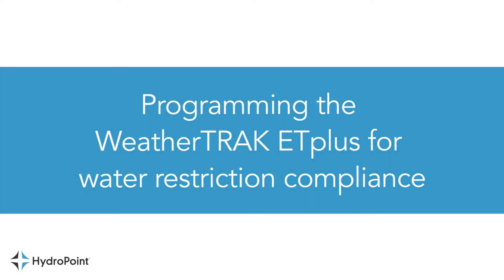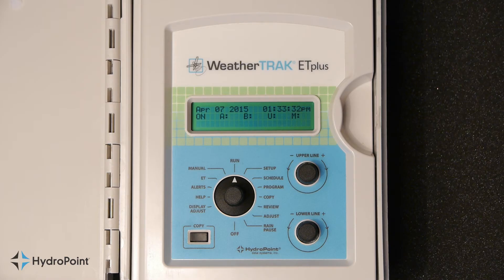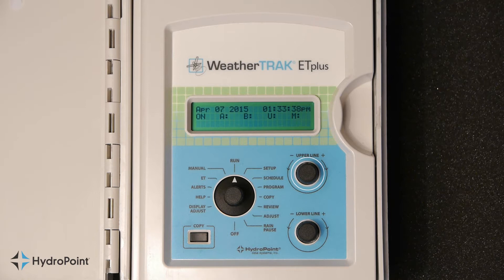Programming the WeatherTrack ET Plus for water restriction compliance. We'll be referring to these controls during this tutorial: the function selector knob, the upper line knob, and the lower line knob.